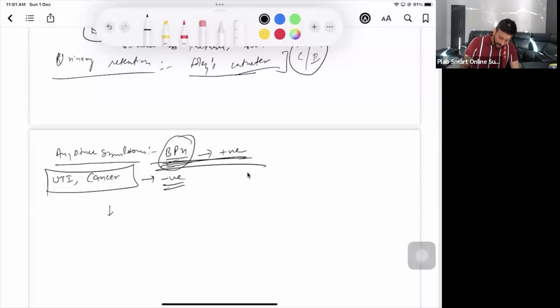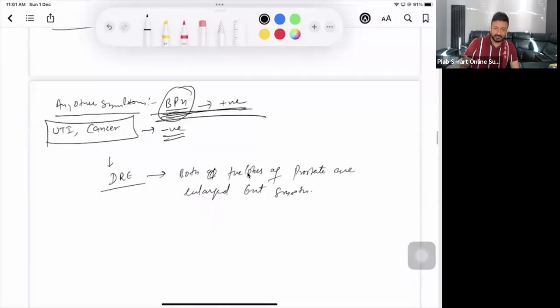So what you're going to do now after asking all these questions? You will be doing examination, digital rectal examination. You just mention, examiner might give you the finding that both the lobes of prostate are enlarged but smooth. That's it. So what you can explain? You can explain that it might be because of the enlarged prostate.